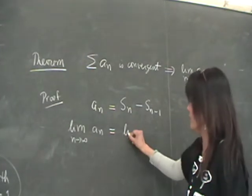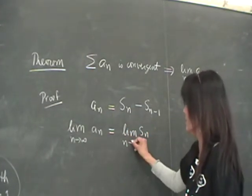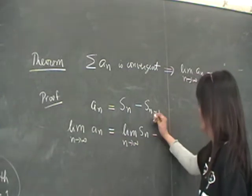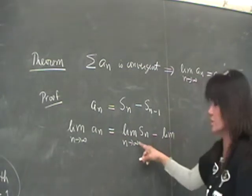Now the limit of the right side is, I can write as limit of S of N as N goes to infinity minus, isn't it? I can do subtraction, right?